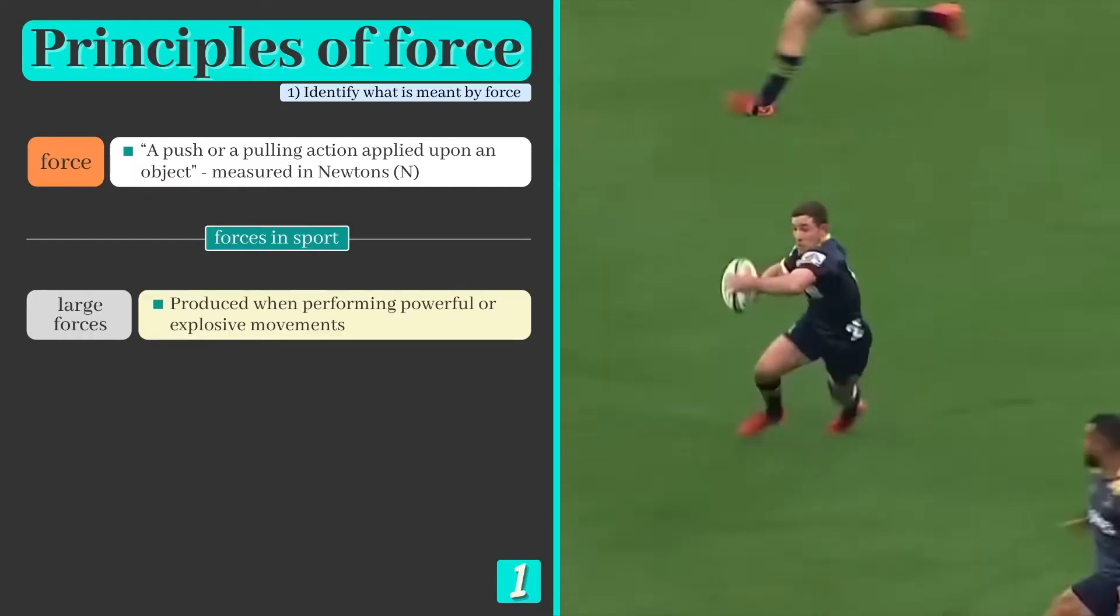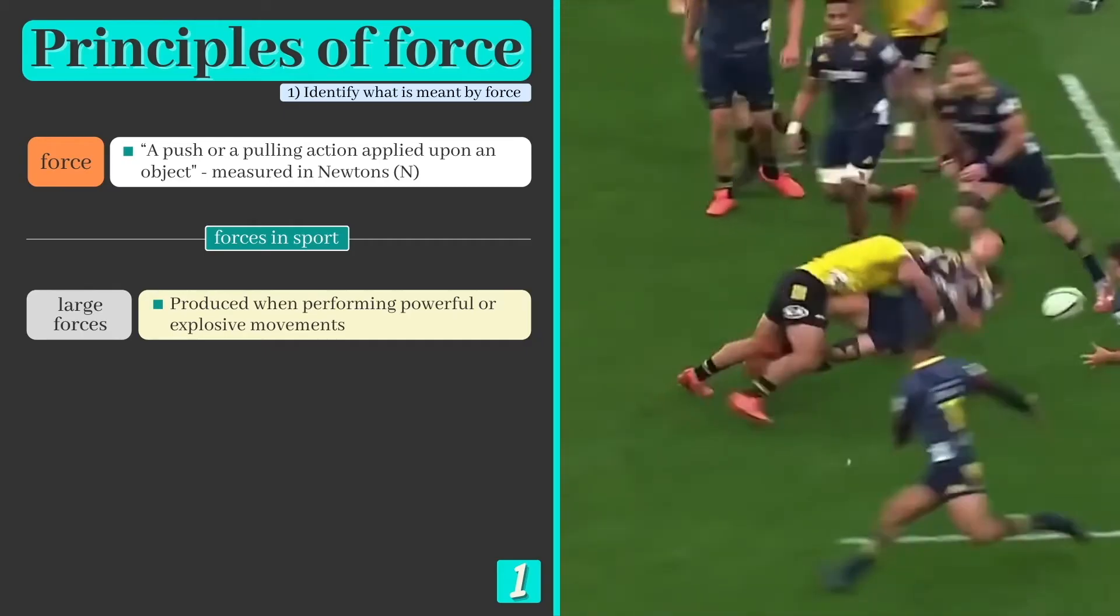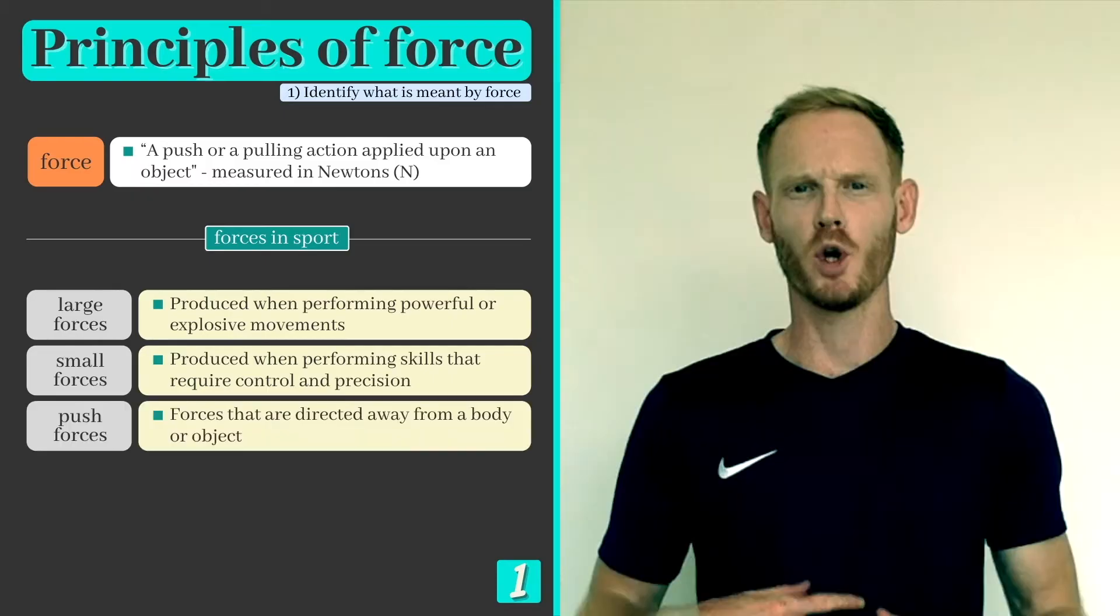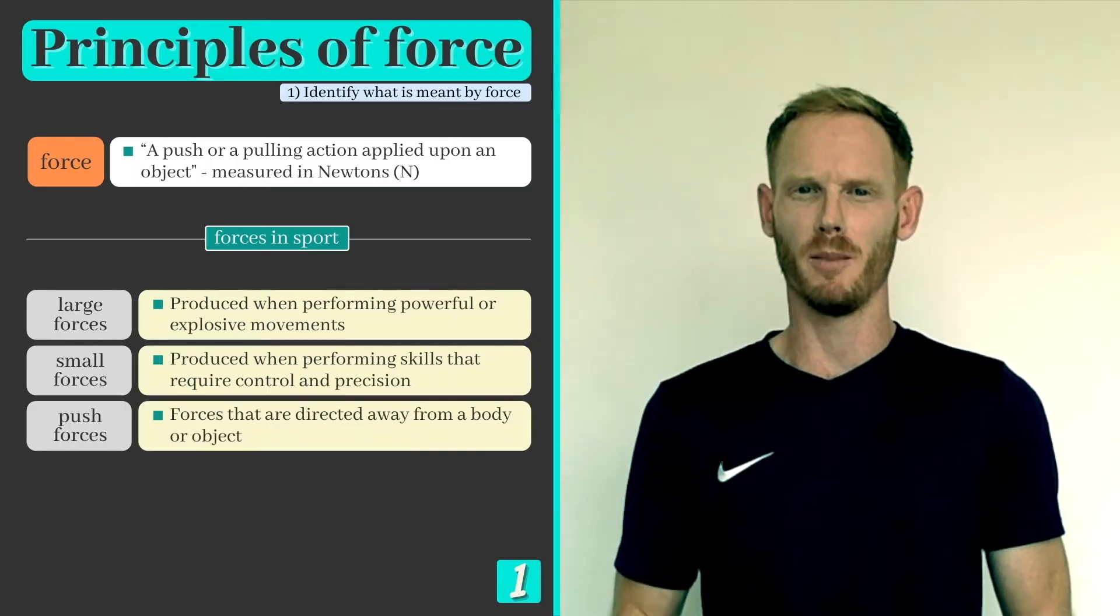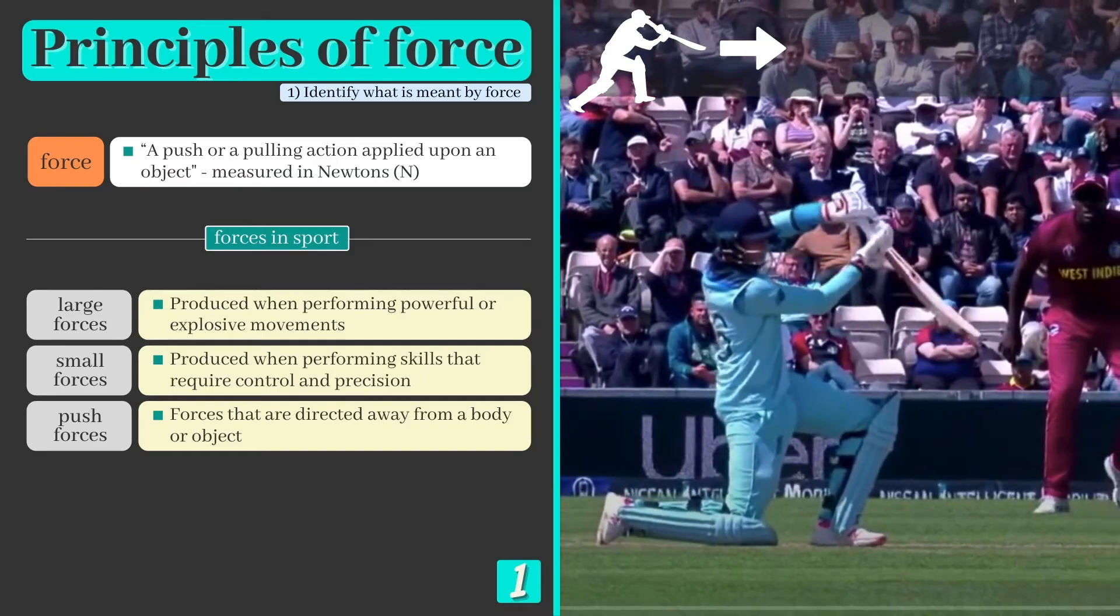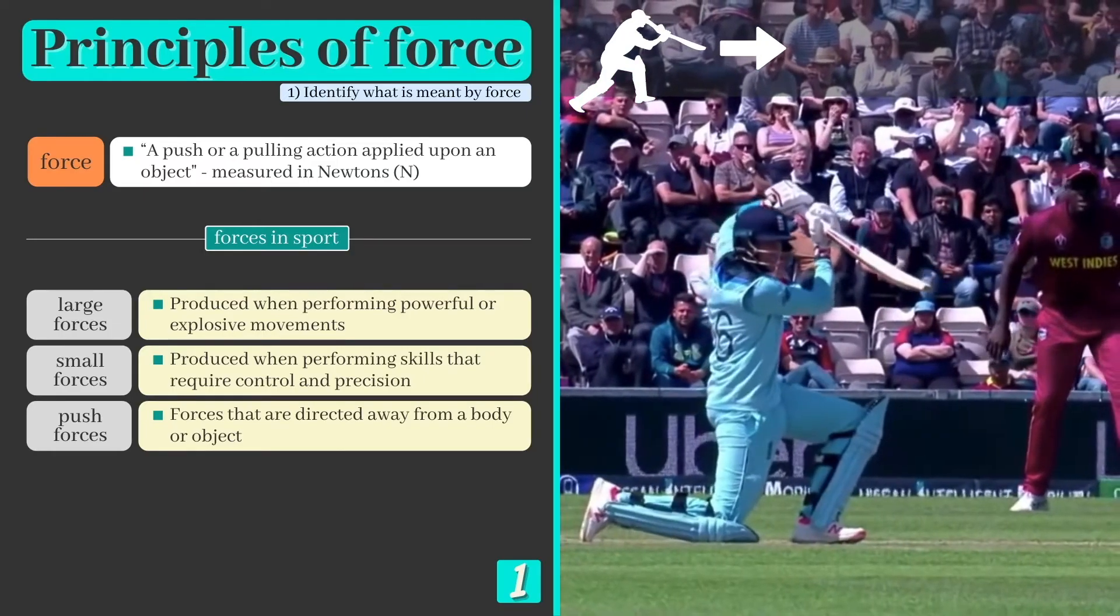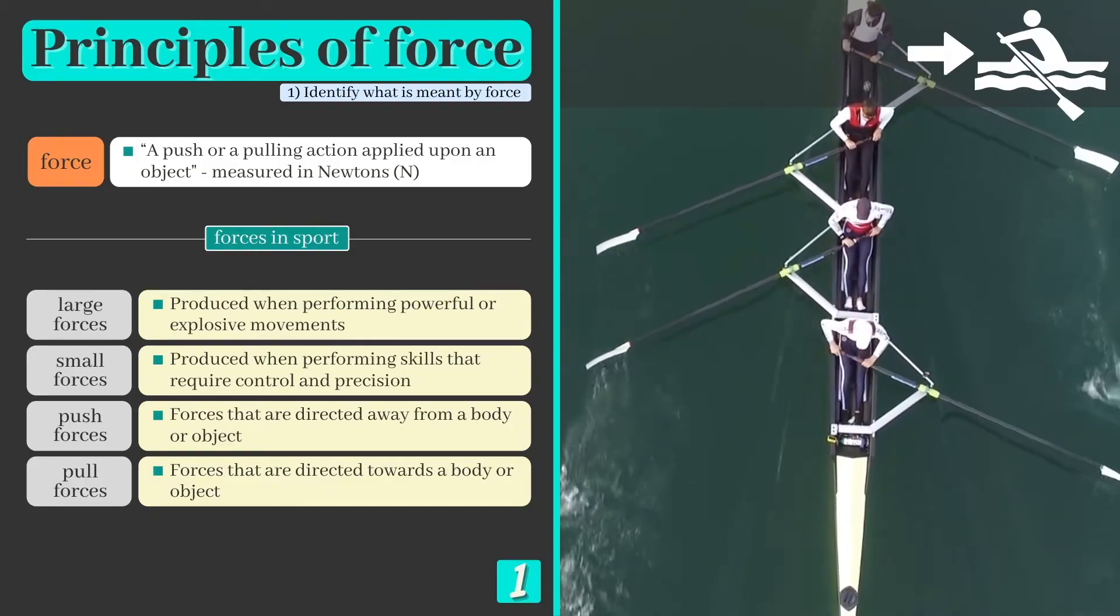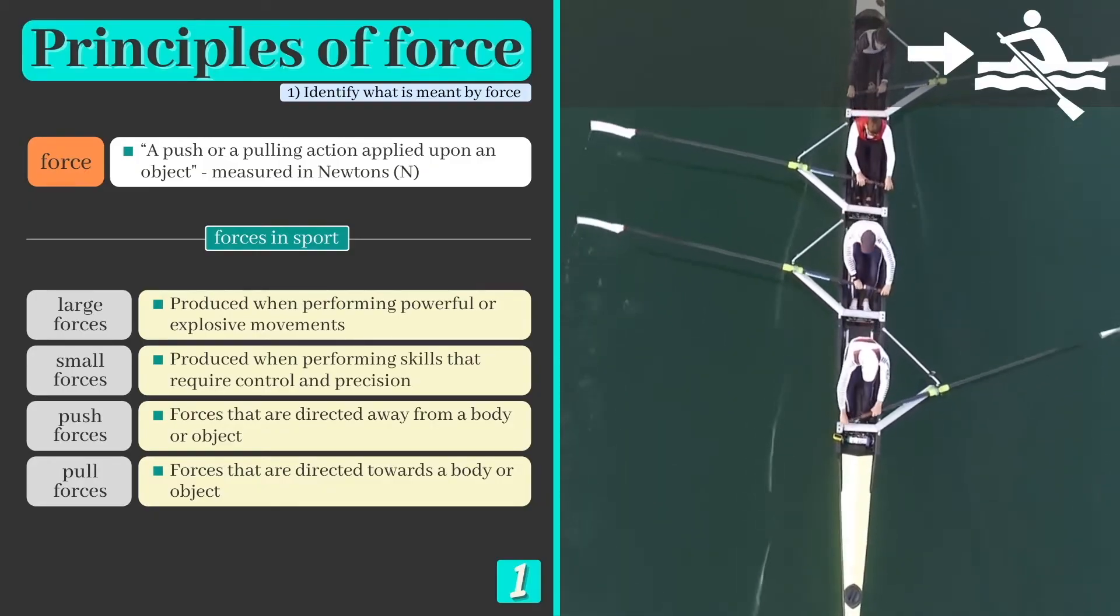They are applied in large quantities when a rugby player makes a tackle or in a more controlled way when a golfer plays a chip onto the green. Push forces are directed away from the body or object producing them and can be seen when playing a forward drive in cricket or throwing to a base in rounders. Pull forces are directed towards a body or object and are used in rowing to propel the boat through the water.